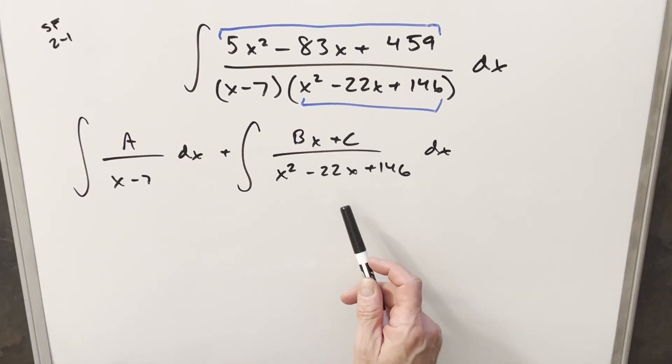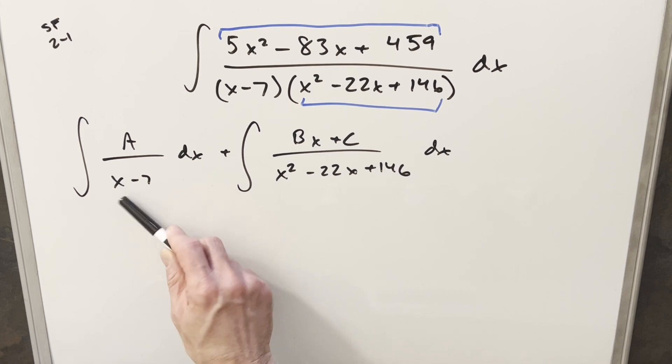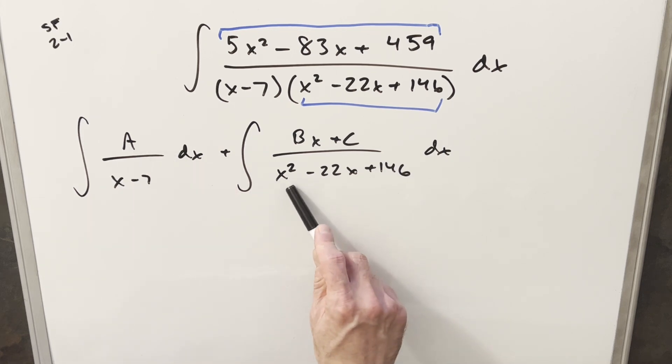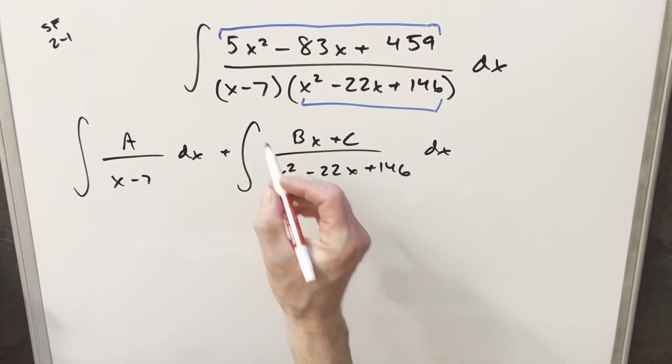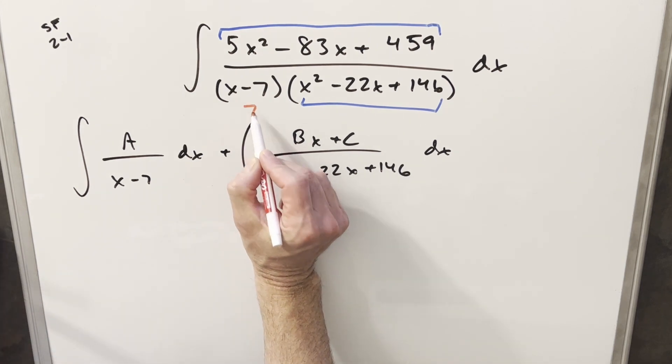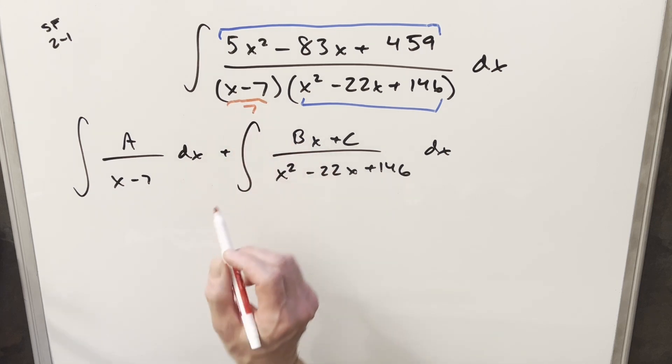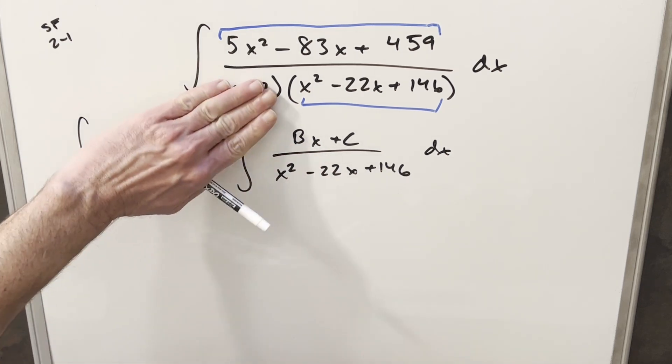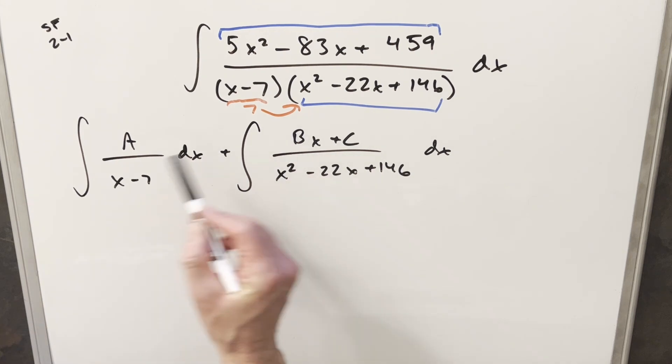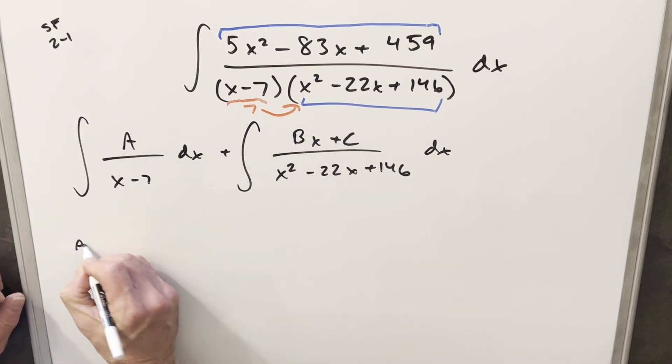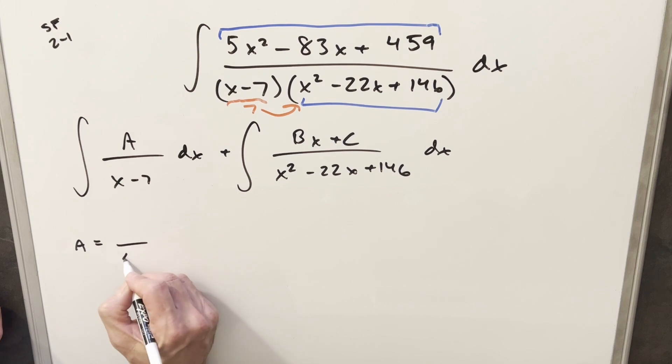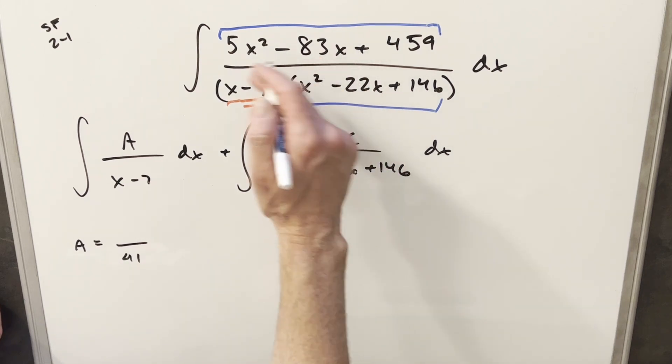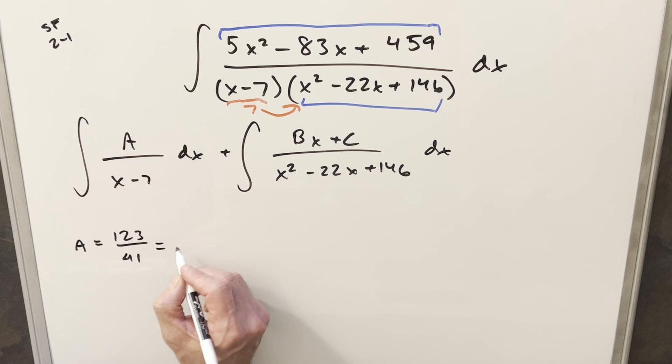So what I've done here is we've split this up into two integrals, just splitting up the denominator. In the numerator we want one degree less than the denominator. So like this is the first degree polynomial, we go for a zeroth degree. And for a quadratic, we go for first degree. And I can actually try to use the cover-up method on this. So if I take a seven and plug it in here, this is going to make this term zero. We cover this up and plug the seven in here. Now this is going to give us our A value. And if you do this, we're going to get 41 in the denominator and 123 in the numerator. And this can be reduced to just a three. So we have A equals 3.